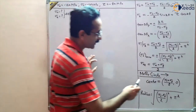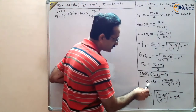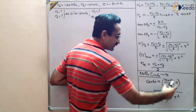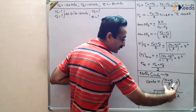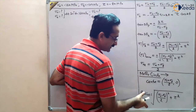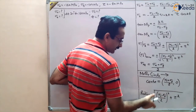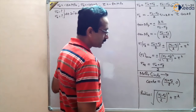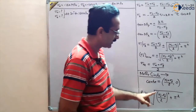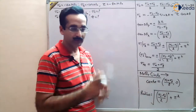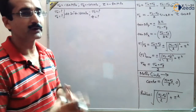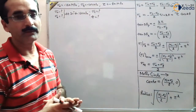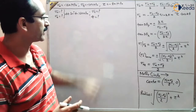In Mohr circle, the center is given by the equation (sigma_x + sigma_y)/2, comma 0. This is the coordinate of the center of the circle, and this expression under the root gives the radius of the circle. By finding the center and radius, we will draw the Mohr circle and use it to find the required quantities.